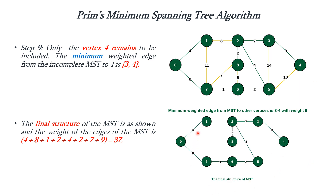We are adding all the costs to find the total cost of the MST. We remove all the fringe vertices which cannot be included because including them would create a cycle. The final MST has a total cost of 37. This is about Prim's minimum spanning tree algorithm. Thank you.